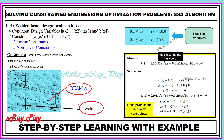We have to satisfy all these constraints. Here you can see the beam A that is held by welded beam B, and you can see the decision variables x1, x2, x3. We have different constraints like shear stress, bending stress, and so on — we have to satisfy all these constraints for this problem.